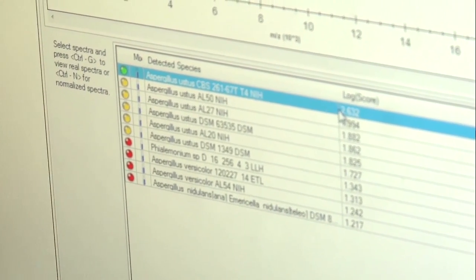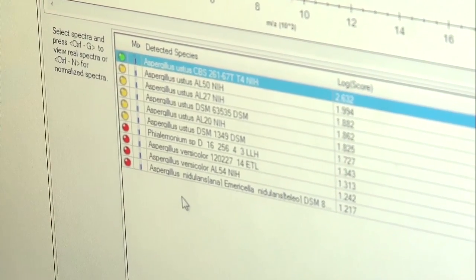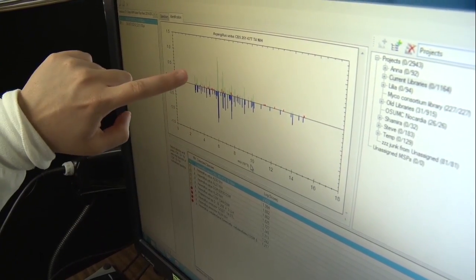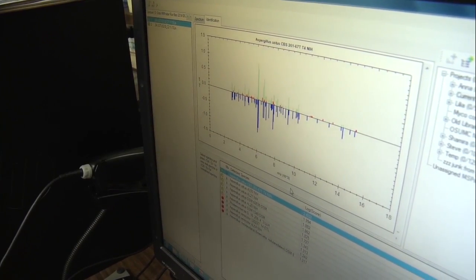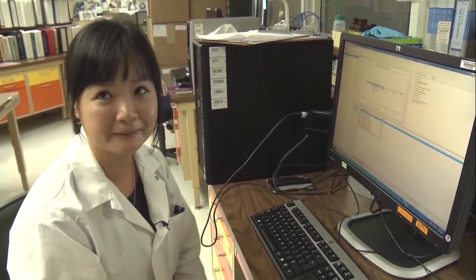Following that, we have these guys scoring in the yellow range. They're pretty good, but not as good as greater than two. Anything that's red means it was a poor identification. All the green peaks show you where there's an exact match in the database. That's how we do identification now, literally within a few minutes.